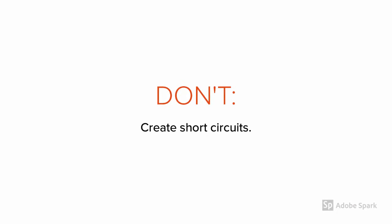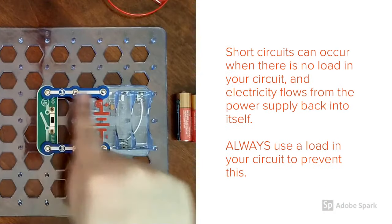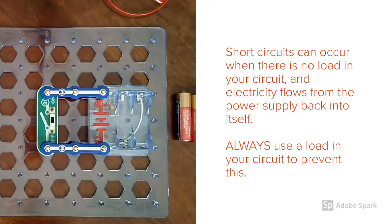Our first and probably most important don't is creating short circuits. A short circuit can occur when you create a connection from one side of the power supply to the other without having the current go through a load. If I were to turn on the circuit I built on the left, the current would travel from the battery right back into itself. No electricity would be used by any load and this would fry the battery pretty quickly.